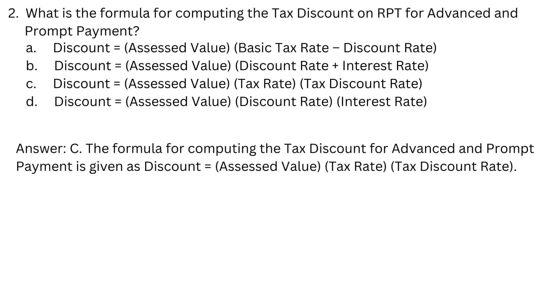Answer: C. The formula for computing the tax discount for advanced and prompt payment is: Discount equals assessed value multiplied by tax rate multiplied by tax discount rate.